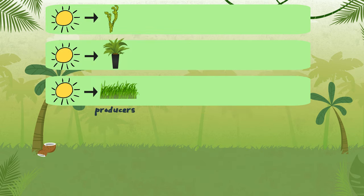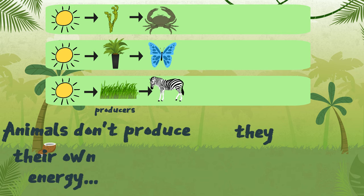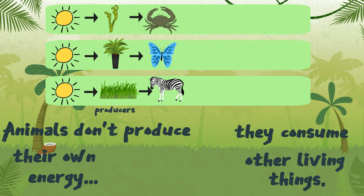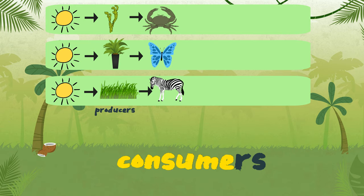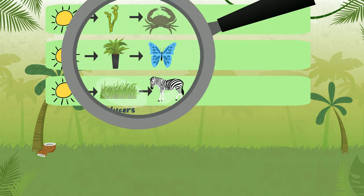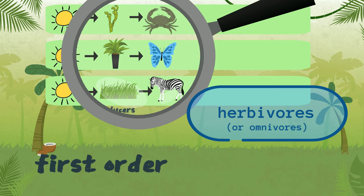At the next step of the food chain, we come to animals. Animals don't produce their own energy. They eat or consume other living things, taking their energy. For this reason, they're referred to as consumers. In this step of the food chain are animals that eat plants — herbivores or omnivores. We call these animals first-order consumers.